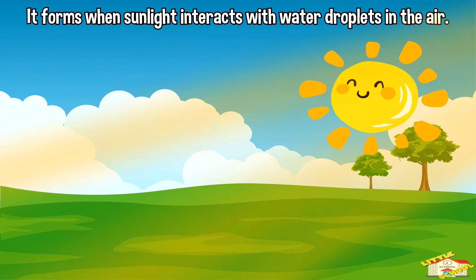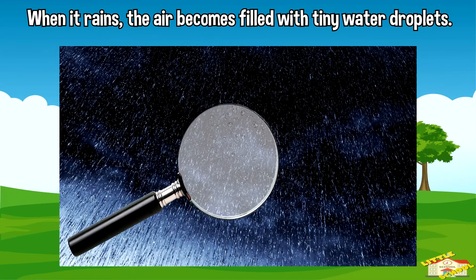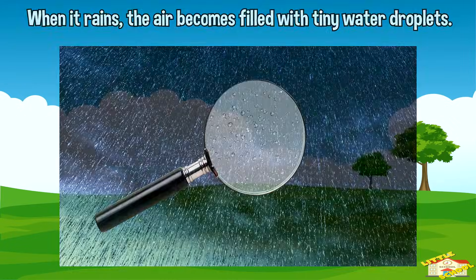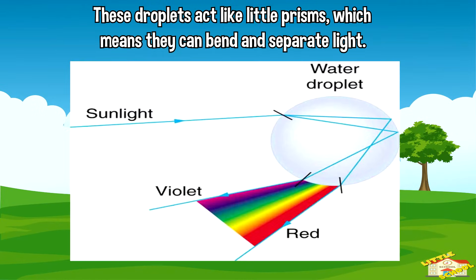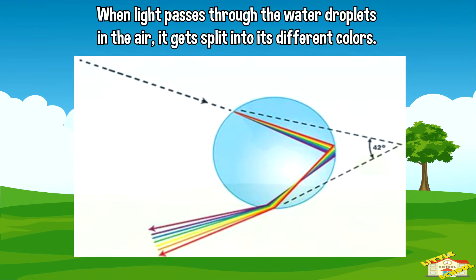It forms when sunlight interacts with water droplets in the air. When it rains, the air becomes filled with tiny water droplets. These droplets act like little prisms, which means they can bend and separate light. Now, sunlight is actually made up of different colors of light, even though we usually see it as white.